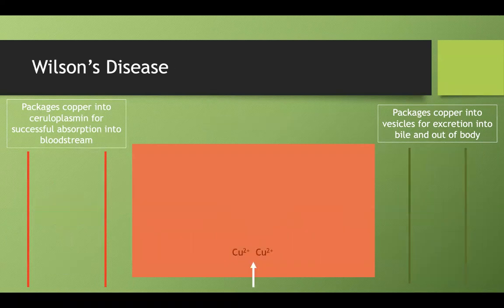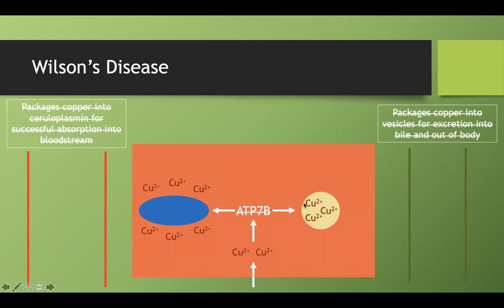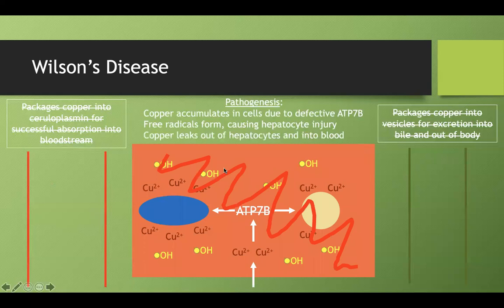In Wilson's disease, copper is still absorbed by the hepatocyte, but the ATP7B gene is non-functional, so both functions stop working. Instead of being neatly packaged into ceruloplasmin or vesicles for excretion, the copper is free-floating in your hepatocyte. Over time, as copper accumulates, free radicals form and damage the hepatocyte. Once structural integrity is lost, some copper leaks into the bloodstream.